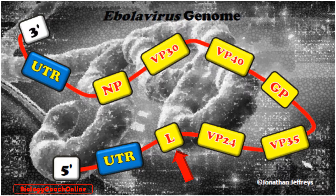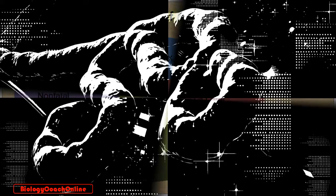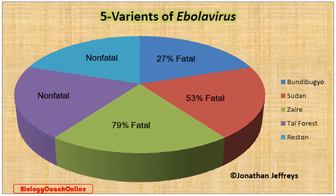All Ebola virus variants have the same seven genes. The order of the genes switches around, and that's how we can identify one variant from the other. There are five Ebola virus variants. The first is the Taï Forest virus, or TAFV, named for the Taï National Forest in West Africa — that is 0% fatal to humans.